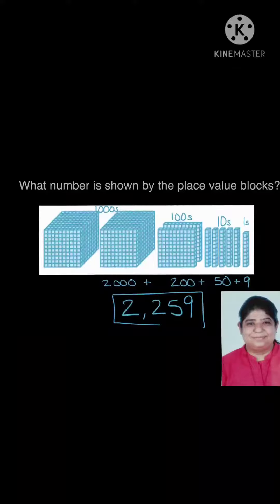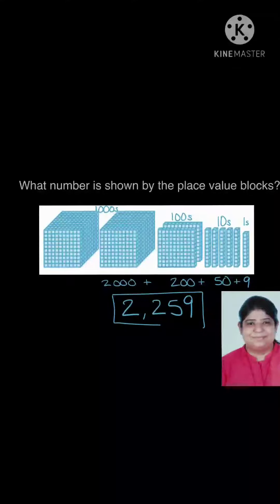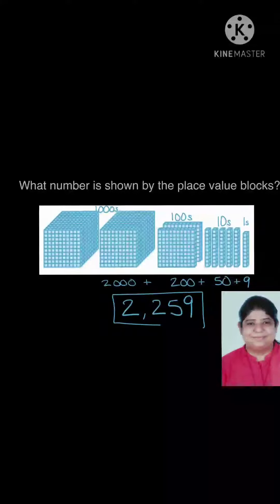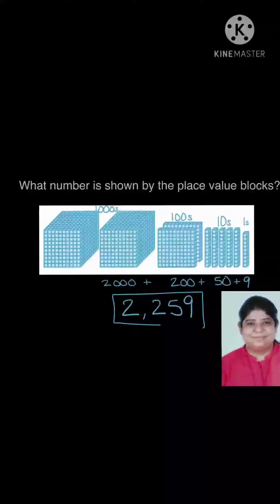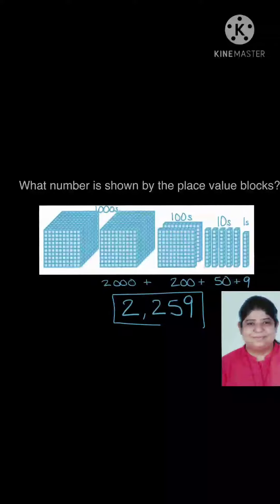As we can see in the diagram, 2 thousands are there, 2 hundreds are there, 5 tens are there, and 9 ones are there. So what will be the answer? 2000 plus 200 plus 50 plus 9 — that will be 2259.